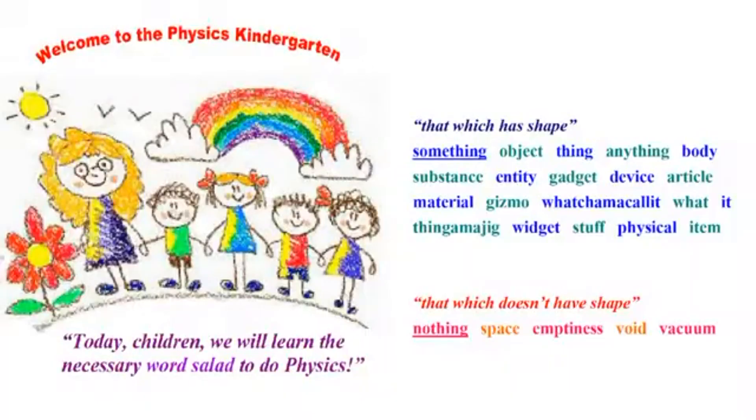They can say whatever they want at the mathematical asylum over there — they don't fool people with a little bit of street smartness. So let's take these fellows to kindergarten physics. Here we have kindergarten physics. What this fellow didn't understand is he says 'it's a thing, a substance, but not an object.' Well, object is a synonym of thing, a synonym of substance, a synonym of material, whatchamacallit — they're all perfect synonyms for the purposes of physics.